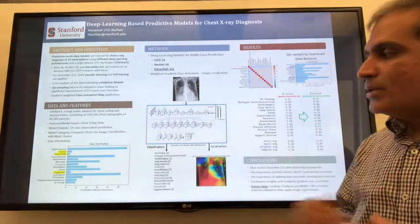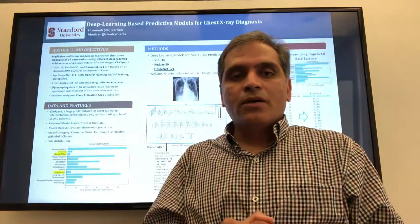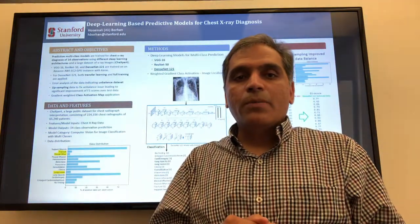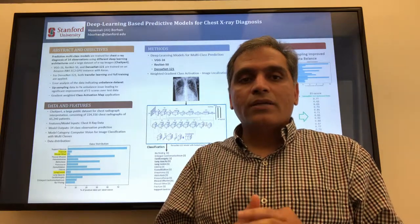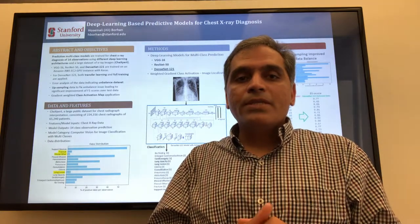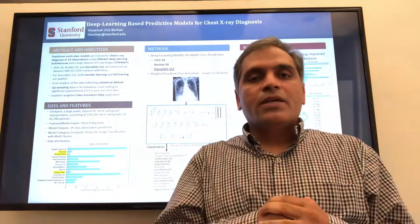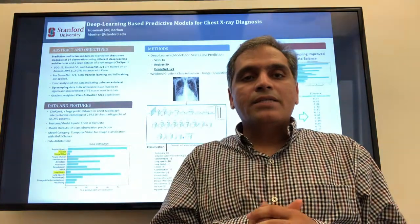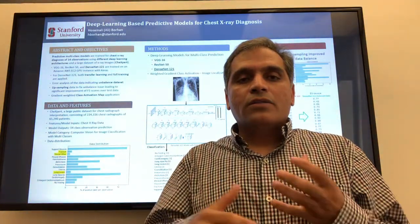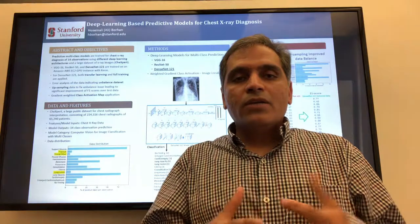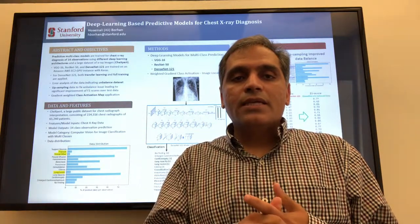This is a schematic view of the model. In terms of data, I used the CheXpert dataset, which is publicly available from Stanford University and includes around 200,000 images. For the baseline model, I applied transfer learning on DenseNet-121 and initially got relatively low performance results on the test data.